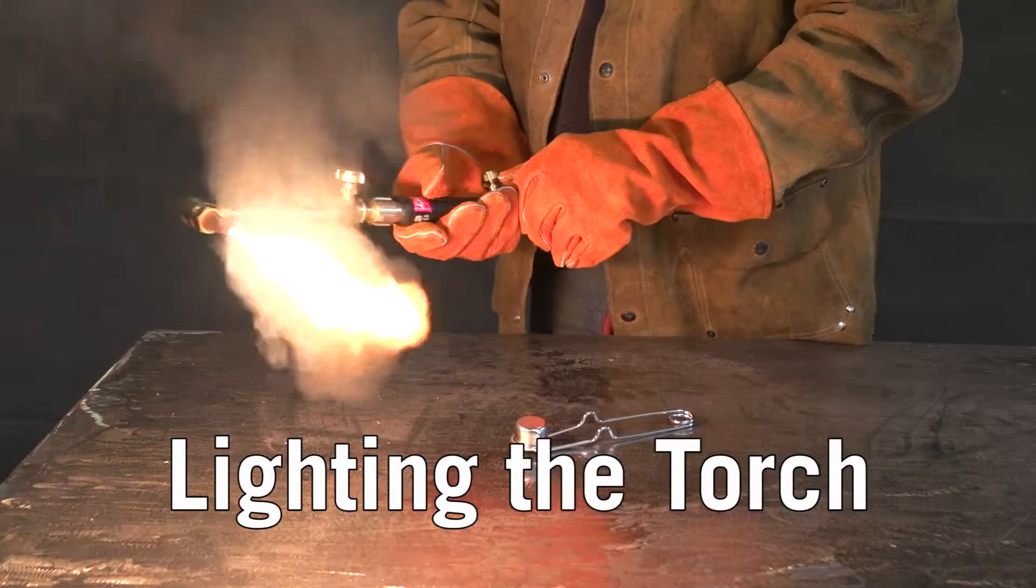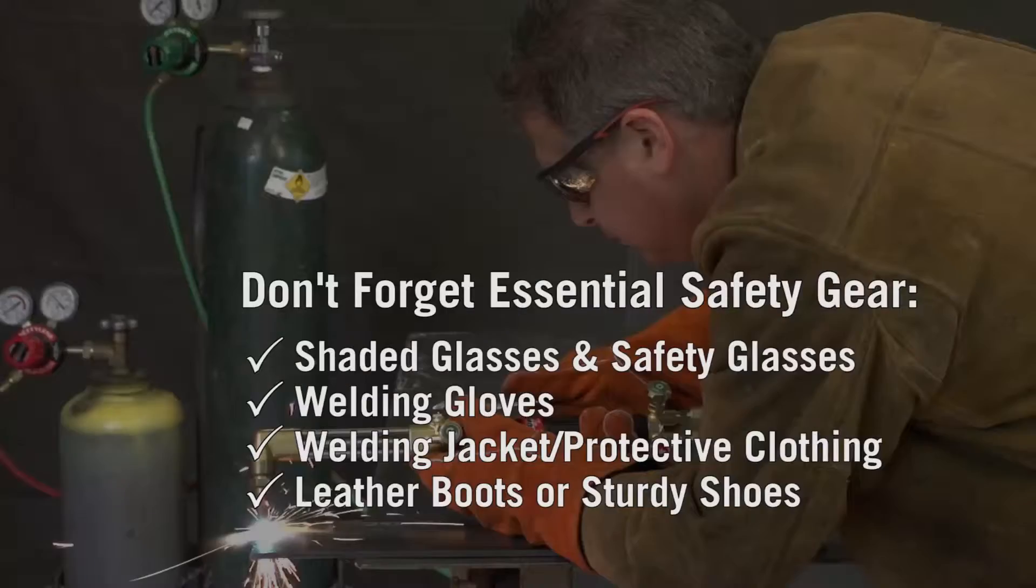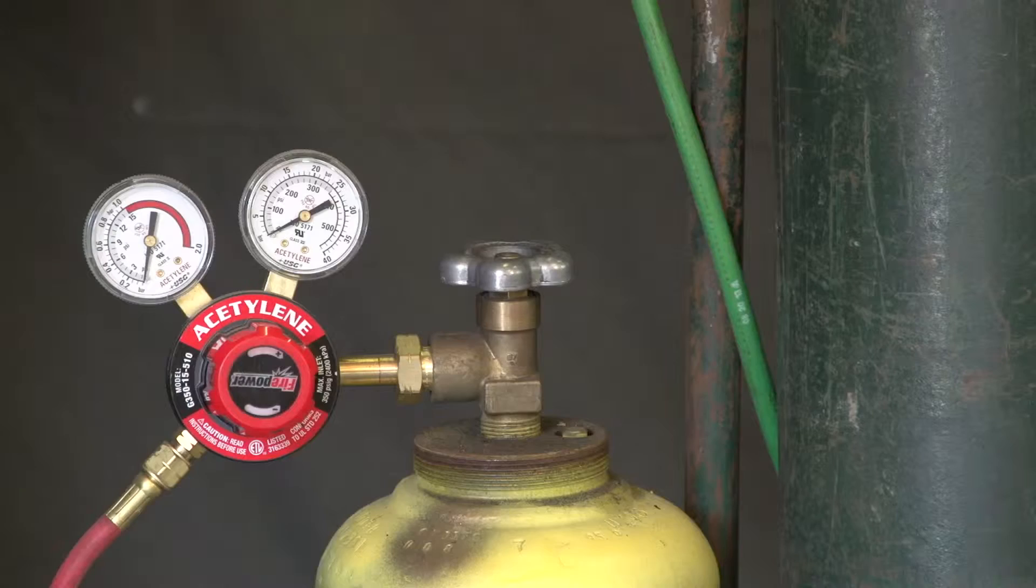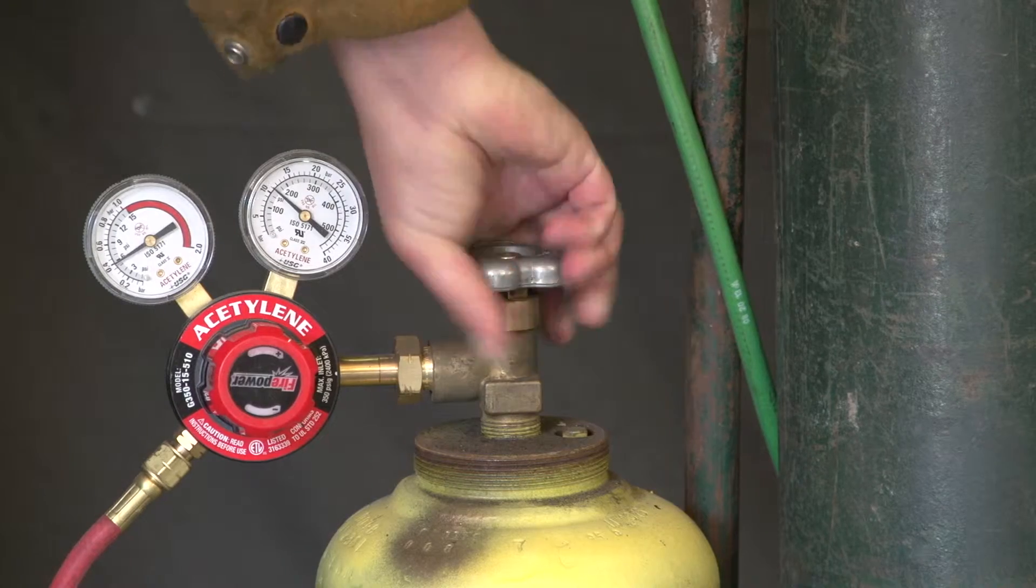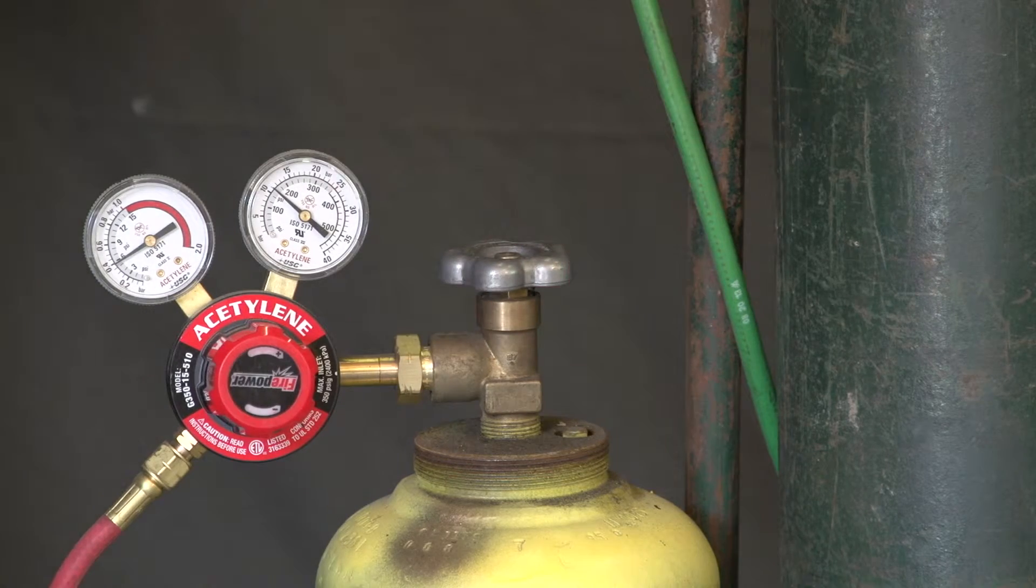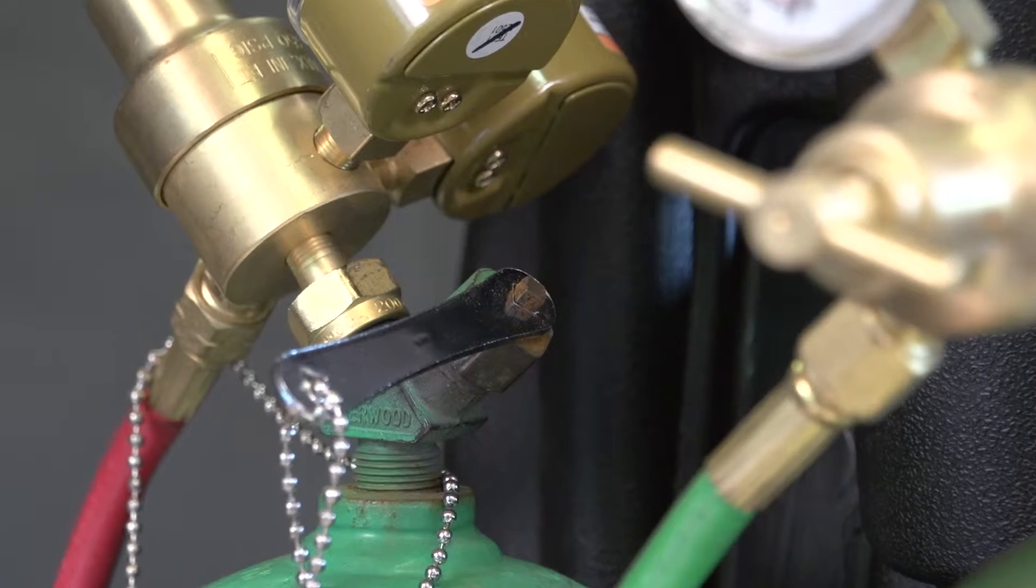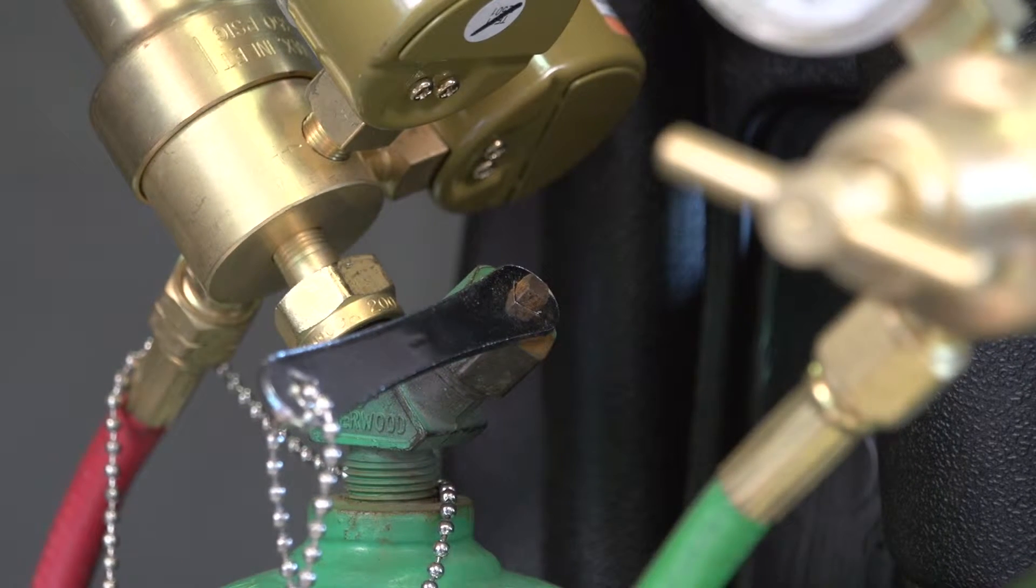Lighting the torch. Open the acetylene cylinder valve three quarters to one turn. If you're using a key, leave it attached to facilitate quick shut-off if needed.